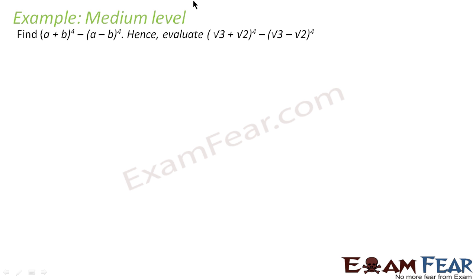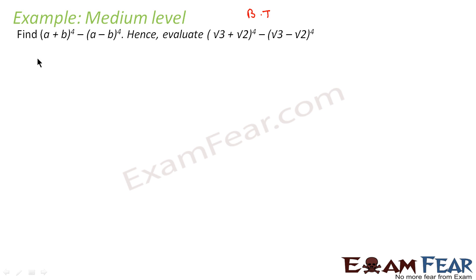Let's take one example which is of medium level. Here we have to find a plus b to the power 4 minus a minus b to the power 4, and then evaluate it. So we have to do this using binomial theorem. We know how to expand a plus b to the power 4 and a minus b to the power 4, so let's do this.